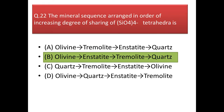Next question: the mineral sequence arranged in order of increasing degree of sharing of SiO₄ tetrahedra. Olivine is first — it is a nesosilicate, with no sharing of SiO₄ tetrahedra. Next is enstatite, a pyroxene, which is a single-chain inosilicate where 2 of the 4 oxygen atoms are shared. Then tremolite, an amphibole with double-chain inosilicate structure where each tetrahedron shares 3 oxygen atoms. Last is quartz, a tectosilicate sharing all 4 oxygen atoms.